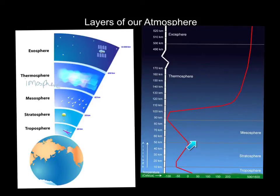In the mesosphere, you can see there's another gradual decrease in temperature. And then in the thermosphere, it increases drastically and just keeps going up into the exosphere.